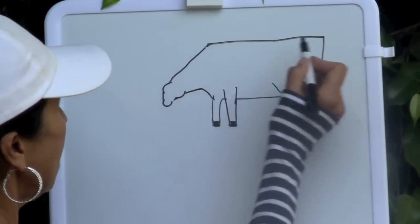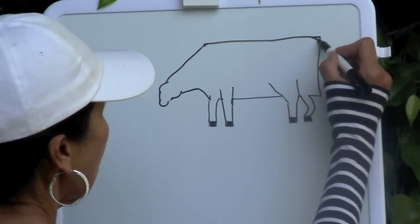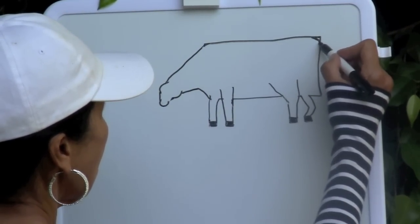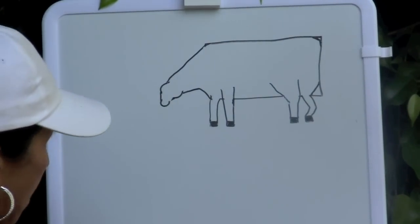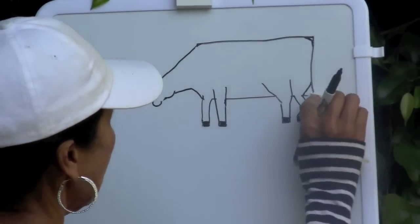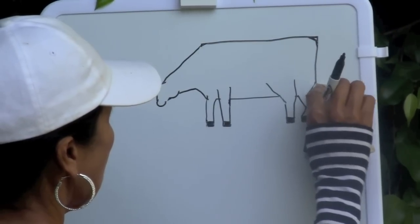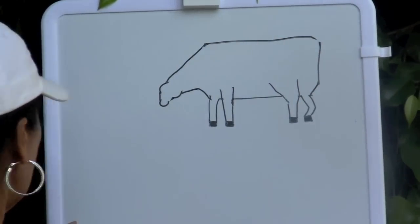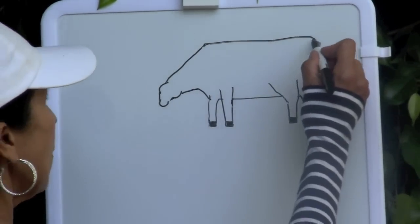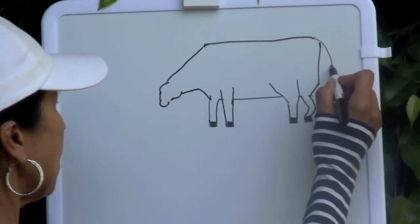Now let's round off those corners of the rectangle because a cow does not have a rectangular body. Then erase those corners and draw the tail.